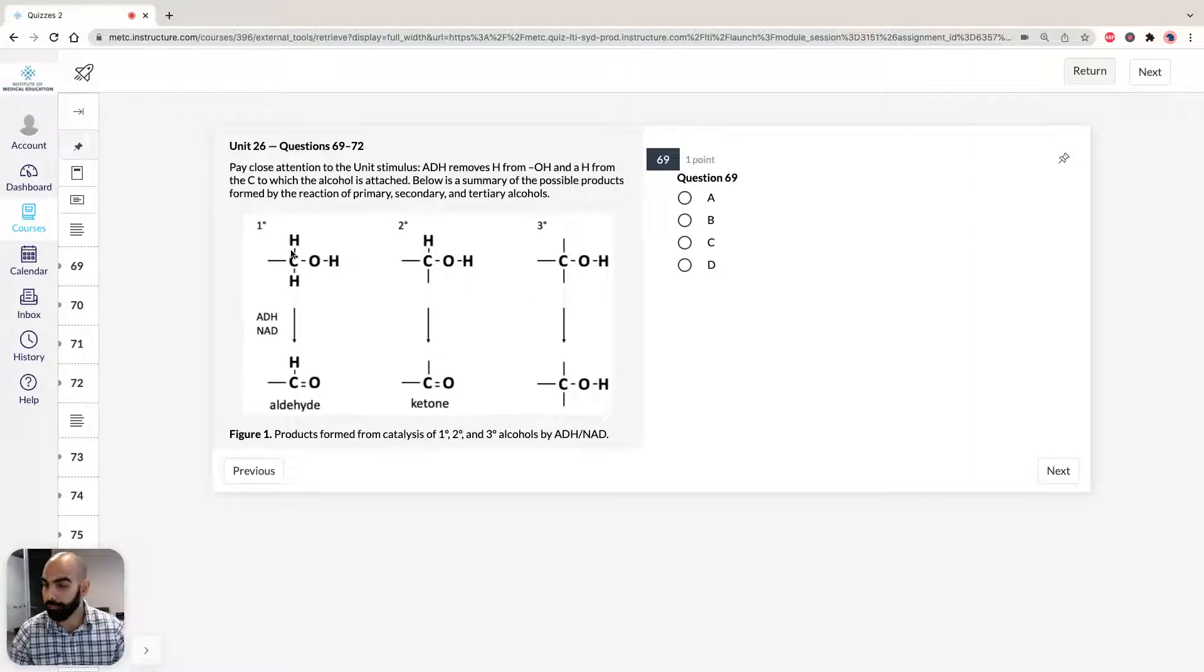I have some examples here. If we react, for example a primary alcohol, we remove the hydrogen from the hydroxyl group, the hydrogen directly attached to the carbon that's attached to the hydroxyl group, we form an aldehyde. If we've got two carbons bound, so it's a secondary alcohol, we form a ketone. And as we said before, tertiary alcohols don't react.